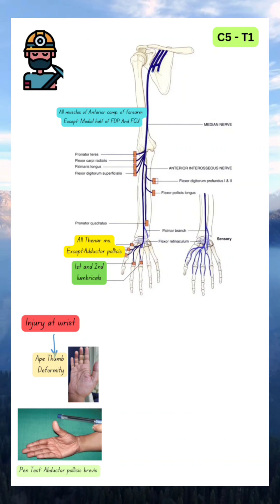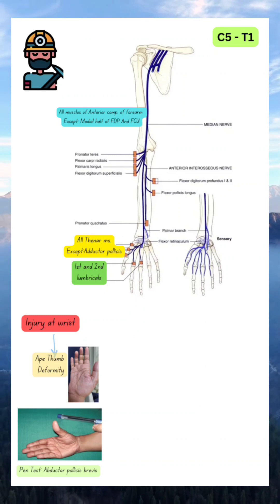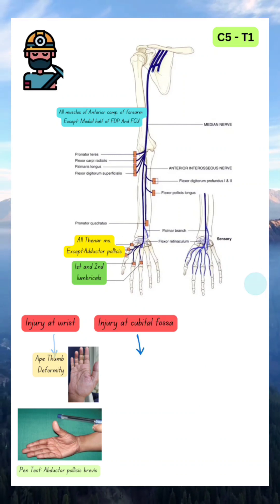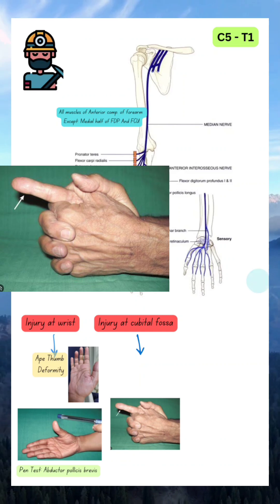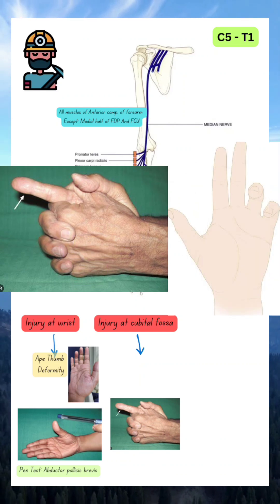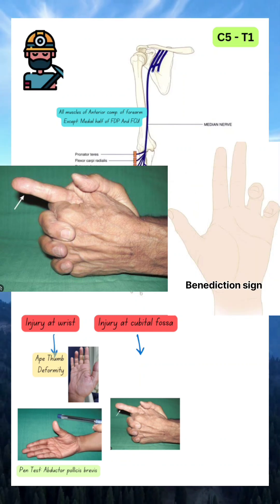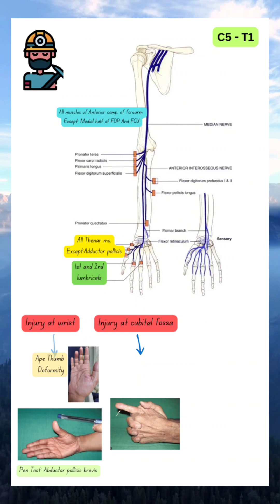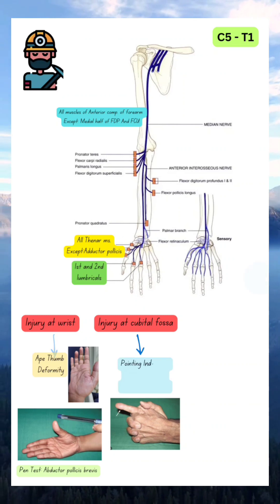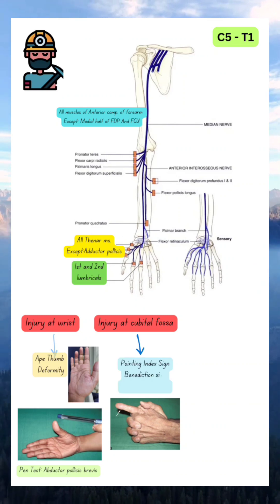Suppose injury is at the level of the cubital fossa. The palmar cutaneous branch of the hand is also affected. When the patient makes a fist, the index finger and thumb are not able to flex fully. This is called the pointing index sign, or benediction sign, or the pen clasp sign.